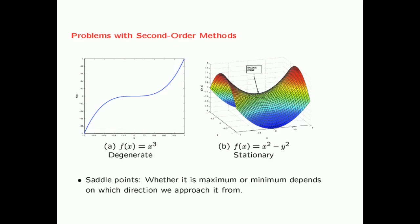Second-order methods are often used in settings like recurrent networks where topologies such as cliffs are more common. Whether to use a first-order or second-order method ultimately depends on the topology of your specific loss function.